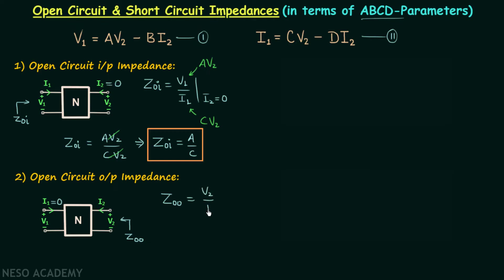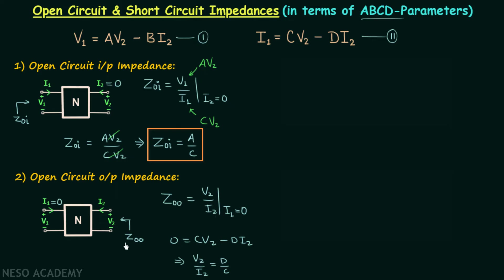V2 divided by current I2, with the defined circuit condition that current I1 should be equal to 0. Now when we put I1 equal to 0 in equation number 2, we will have 0 equal to C·V2 minus D·I2. From here we can say that V2 divided by current I2 is equal to D divided by C, and V2 over I2 is equal to Z sub OO. So our open circuit output impedance is equal to parameter D divided by parameter C. Remember this result.